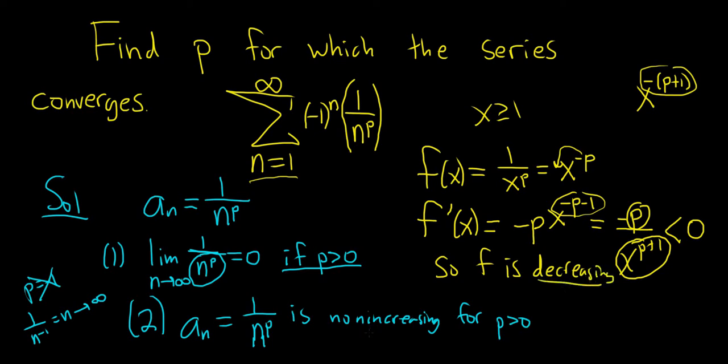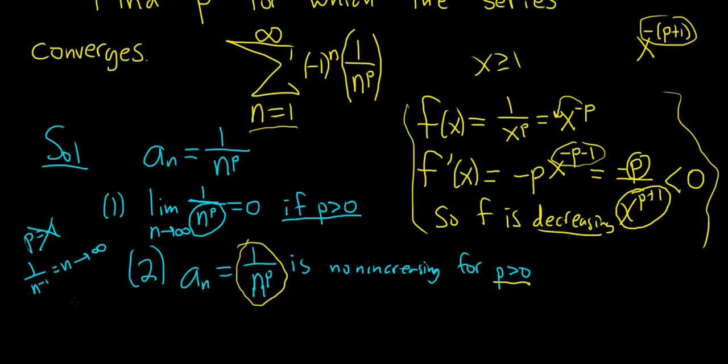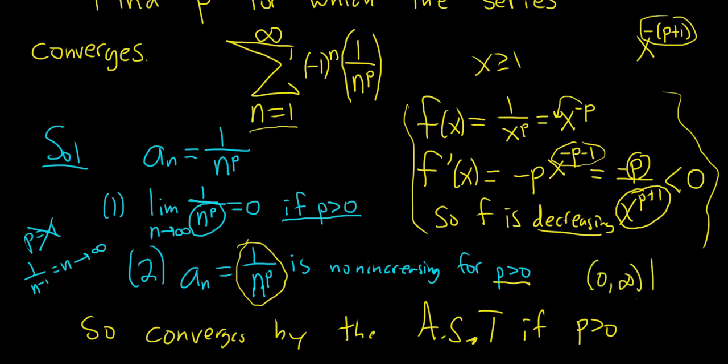And non-increasing means decreasing or staying the same, so everything is satisfied. So again, is it necessary that you do this? I don't think so. I think it's pretty clear, just by looking at it, that it's going to be getting smaller and smaller as long as p is positive. So both conditions are satisfied. So it converges by the AST, alternating series test, if p is positive. So the answer here will be 0 to infinity. This is the set of all values of p for which the series will converge. That's it.